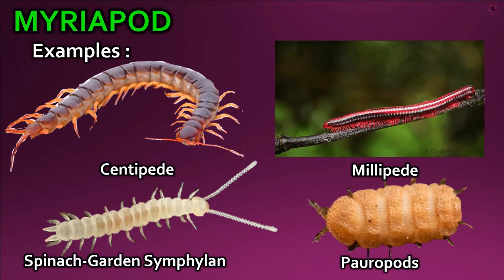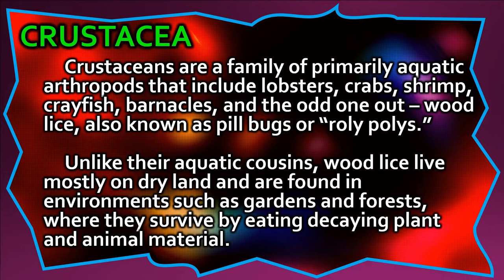Crustaceans are a family of primarily aquatic arthropods that include lobsters, crabs, shrimp, crayfish, barnacles, and the odd one out — wood lice, also known as pill bugs or roly-polys. Unlike their aquatic cousins, wood lice live mostly on dry land and are found in environments such as gardens and forests, where they survive by eating decaying plant and animal material.